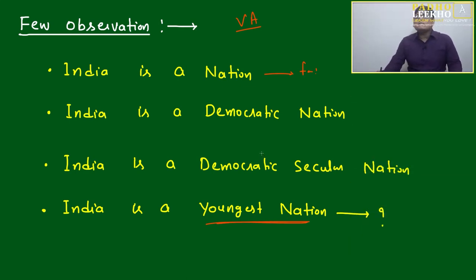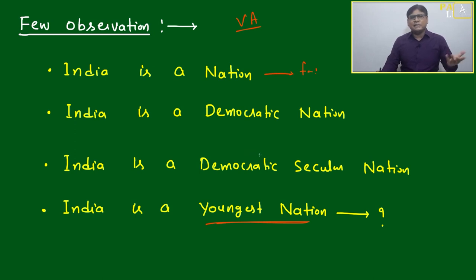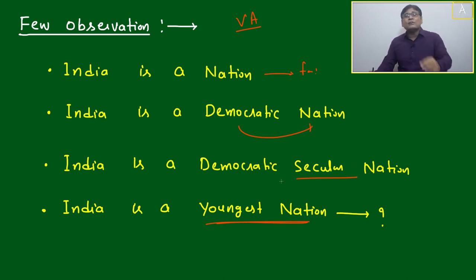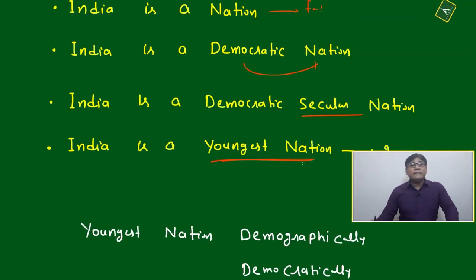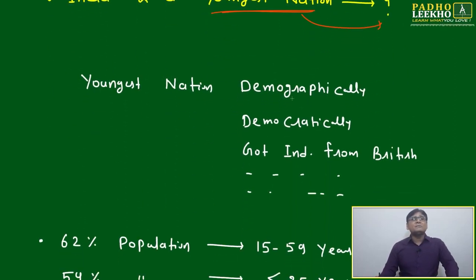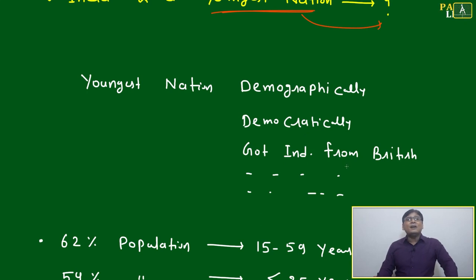But the first three lines need no additional information. It is clear-cut information. India is a nation — no contradiction. India is a democratic nation — no contradiction. India is a democratic secular nation — no contradiction. All are just points from our Constitution. But India is a youngest nation — we need some more words to clarify it. Youngest nation demographically?